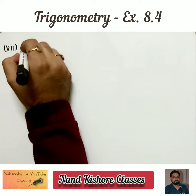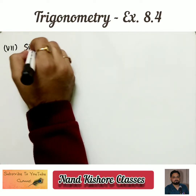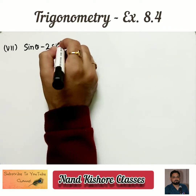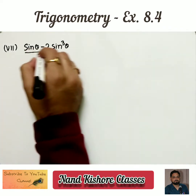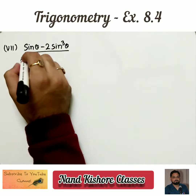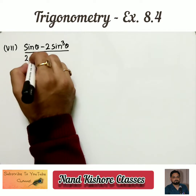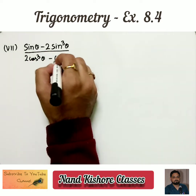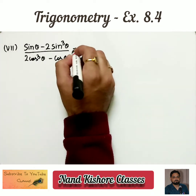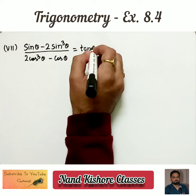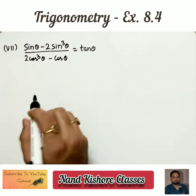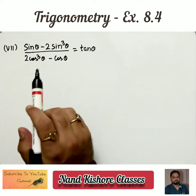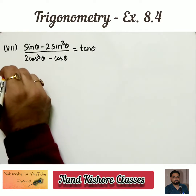Part 7 is: sin θ minus 2 sin cube θ over 2 cos cube θ minus cos θ is equal to tangent θ. We need to prove it. The left side we need to prove equal to the right side.